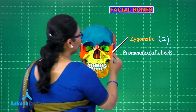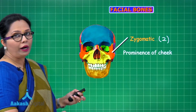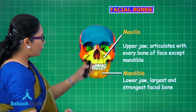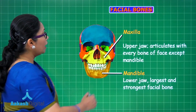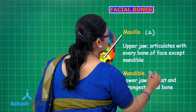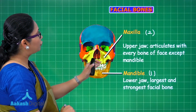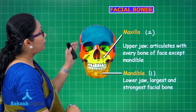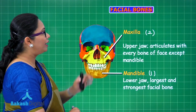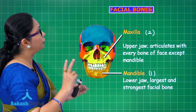The zygomatic bones are paired and are also called the cheekbones — the prominence of the cheek that we see is actually the zygomatics. The maxilla (upper jaw) is paired, while the mandible (lower jaw) is a single unpaired bone. Both have sockets for teeth. Out of the entire skull, the only movable bone is the mandible.